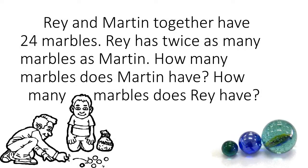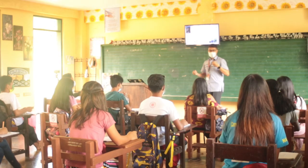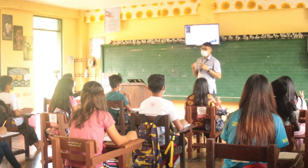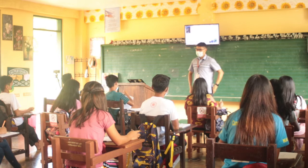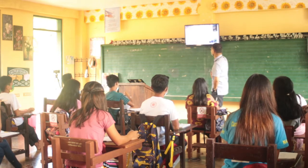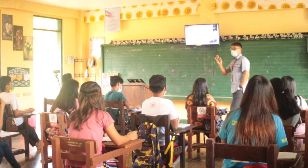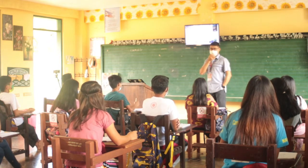Can you read that with me? Ray and Martin together have 24 marbles. Ray has twice as many marbles as Martin. How many marbles does Martin have? How many marbles does Ray have? Who are the persons involved in the question? Ray and Martin. And what is that thing that they have together? Marbles.